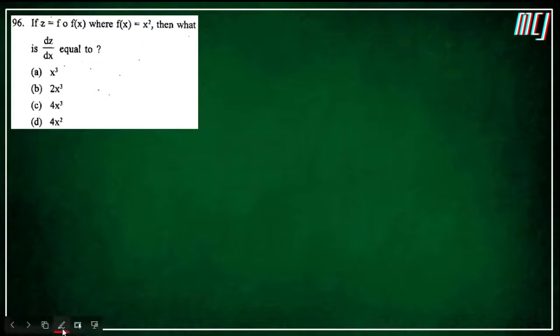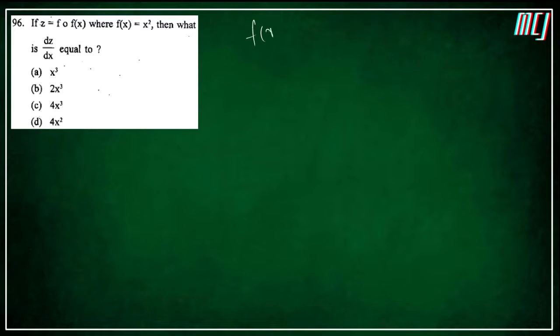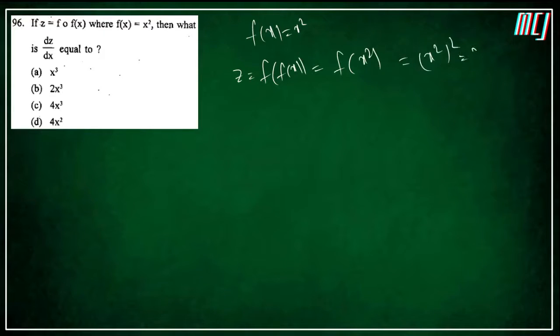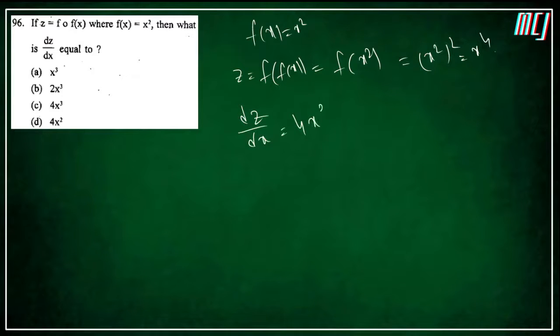Question 96: z = f(f(x)), f(x) = x². So f(f(x)) = f(x²) = (x²)² = x⁴. Therefore dz/dx = 4x³. Option C is the correct answer.